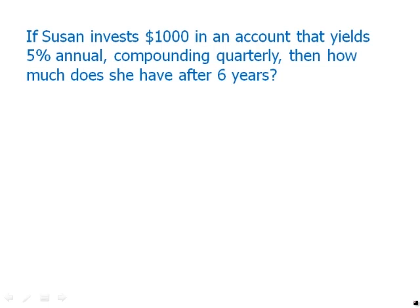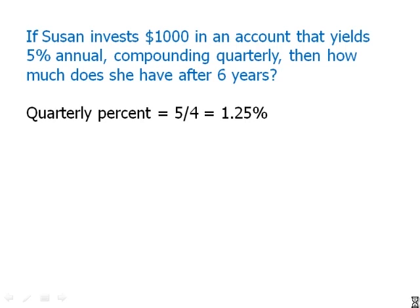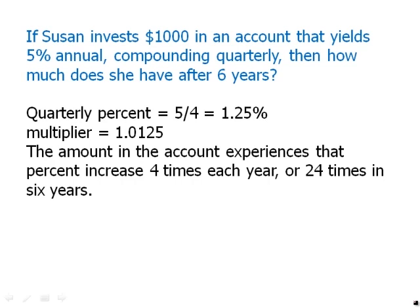The first thing is that 5% annual has to get divided by 4. So the quarterly percentage is 1.25%, and the multiplier for that is 1.0125. The amount in the account experiences that percent increase 4 times each year, or 24 times in 6 years. So we're multiplying by that multiplier 24 times. The final amount will be $1,000 times 1.0125 to the power of 24.